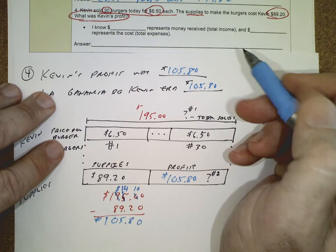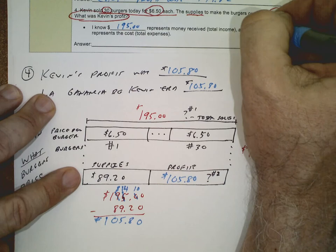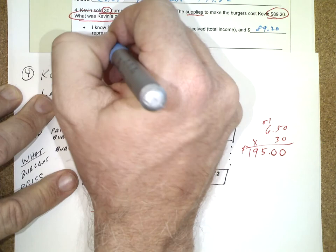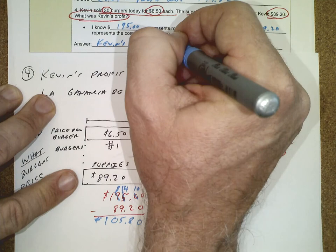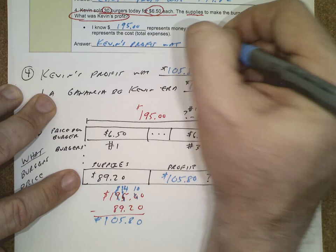We put the result in our answer statement. $195 represents the money received, and $89.20 represents the total expense. Kevin's profit was $105.80. That takes care of problem number four.